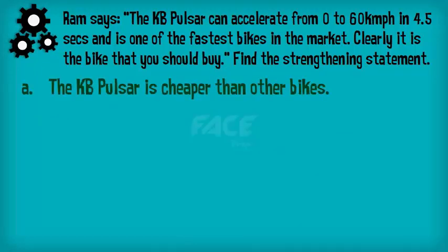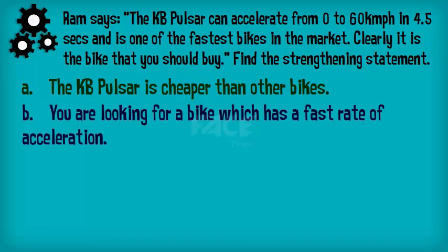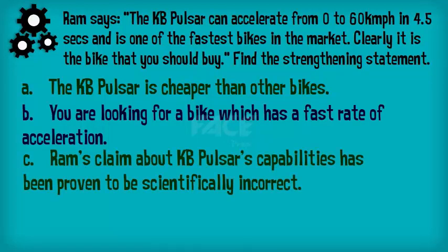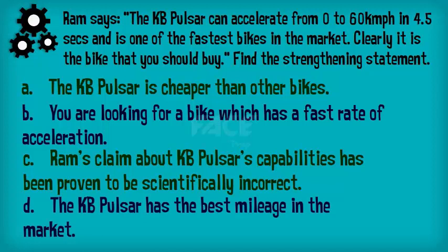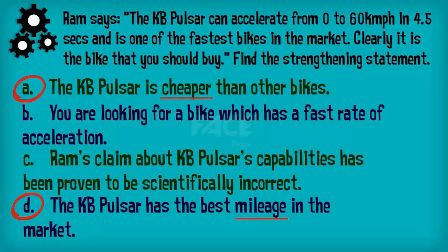A. The KB Pulsar is steeper than other bikes. B. You are looking for a bike which has a fast rate of acceleration. C. Ram's claim about KB Pulsar's capabilities has been proven to be scientifically incorrect. D. The KB Pulsar has the best mileage in the market. Look at options A and D — they are irrelevant to the scope of the argument. Option A talks about cost and option D talks about mileage. These are not our topics of concern, thus they can be eliminated.